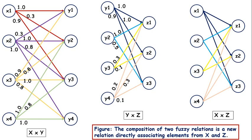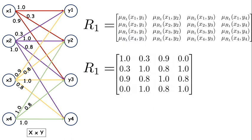Today we'll see the compositions of two fuzzy relations. We have the relations between X and Y, and Y and Z, and we need to figure out the relation between X and Z. To figure out this relation, we will apply three techniques: one called the max-min composition, one called the max-product, and the last one is max-average.